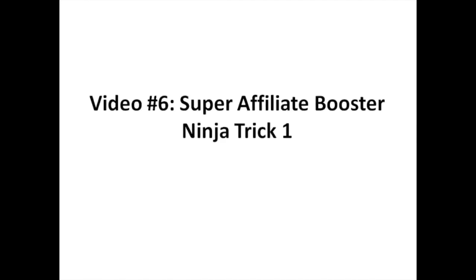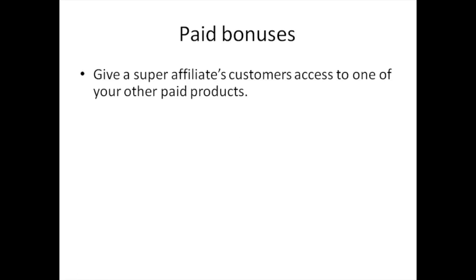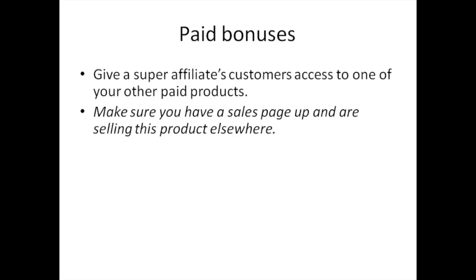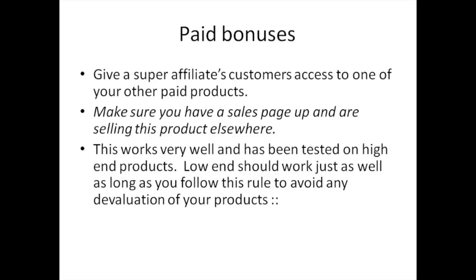Welcome to video number six: super affiliate booster ninja trick number one. This method deals with paid bonuses — basically you want to give a super affiliate's customers access to one of your other paid products. You need to make sure you have a sales page up and are selling this product elsewhere. This works because if the customer can see it's an actual paid product, they're getting it for free by buying through someone else's link. This has been tested on high-end products.